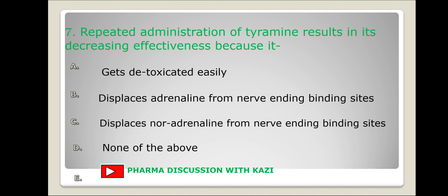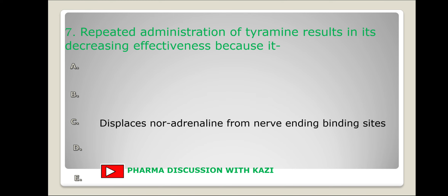Next question: repeated administration of tyramine results in decreasing effectiveness because — it gets detoxicated easily, displaces adrenaline from nerve ending binding sites, or displaces noradrenaline from nerve ending binding sites? It displaces noradrenaline from nerve ending binding sites. This is a type of drug-food interaction.